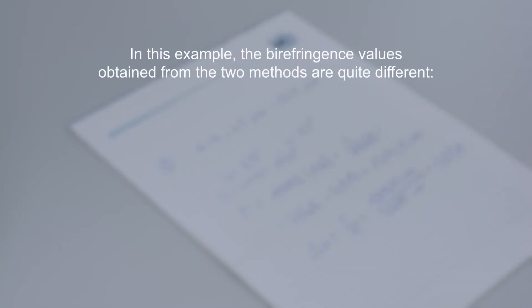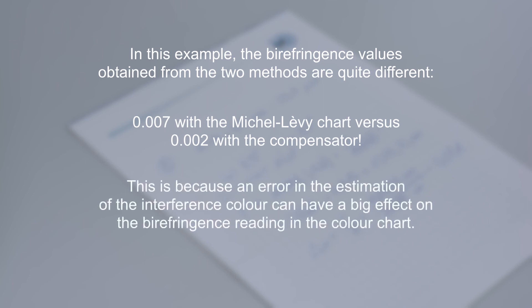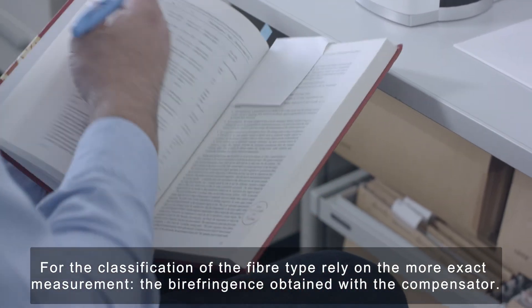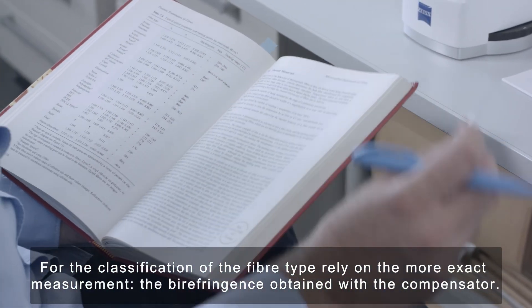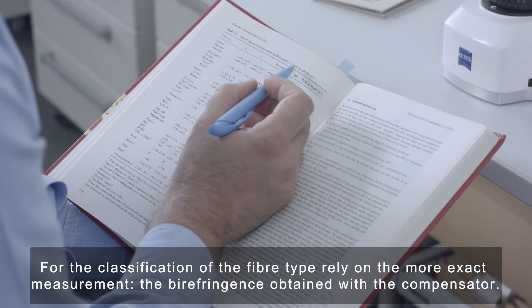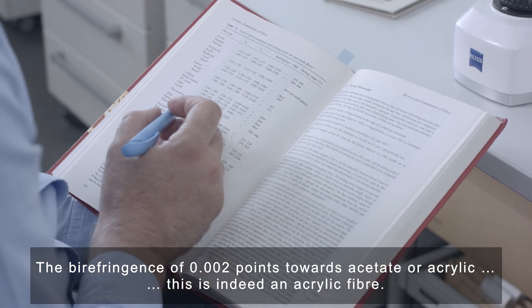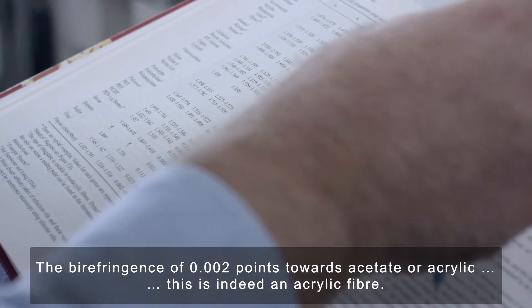In this second example, the birefringence values obtained from the two methods are quite different. 0.007 with the Michel-Levy chart versus 0.002 with the compensator. This is because an error in the estimation of the interference color can have a big effect on the birefringence reading in the color chart. Accordingly, for the classification of the fiber type, rely on the more exact measurement. The birefringence obtained with the compensator. The birefringence of 0.002 points towards acetate or acrylic. This is indeed an acrylic fiber.